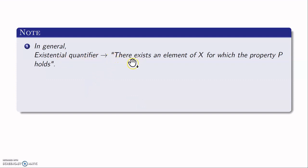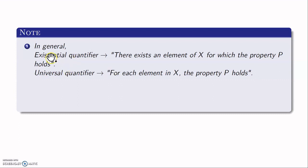In general, the existential quantifier in a statement looks like this: there exists an element of the set X for which the property P holds. For the universal quantifier, some property is true for all the elements of the set of context. So, in general, a universal quantifier statement looks like: for each element in the set X (the set of context), the property P holds — that is, property P holds for each and every element in X.